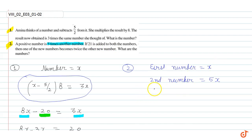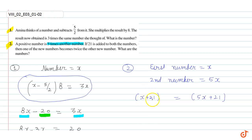If we add 21 to both numbers, the first number becomes x plus 21 and the second becomes 5x plus 21. One of the new numbers is twice the other, so 2 times x plus 21 is equal to 5x plus 21.